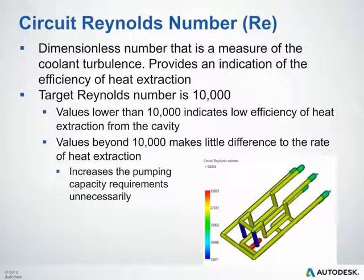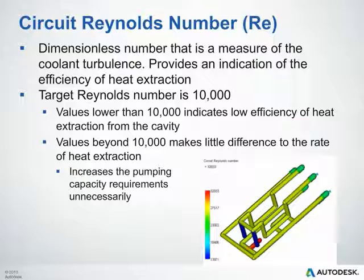The circuit Reynolds number is a dimensionless number that measures coolant turbulence and provides an indication of heat extraction efficiency. The target Reynolds number should be 10,000. Values lower than 10,000 indicate low efficiency of heat extraction from the cavity. However, values beyond 10,000 make little difference to the rate of heat extraction — running at higher flow rates or pressures beyond this point only increases pumping capacity requirements unnecessarily.